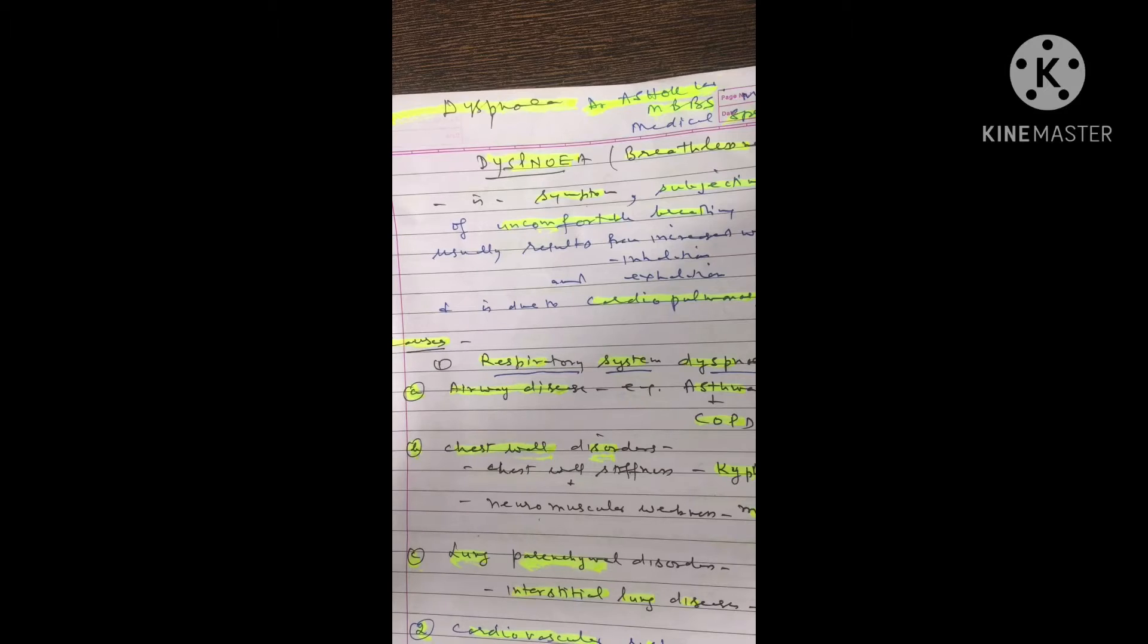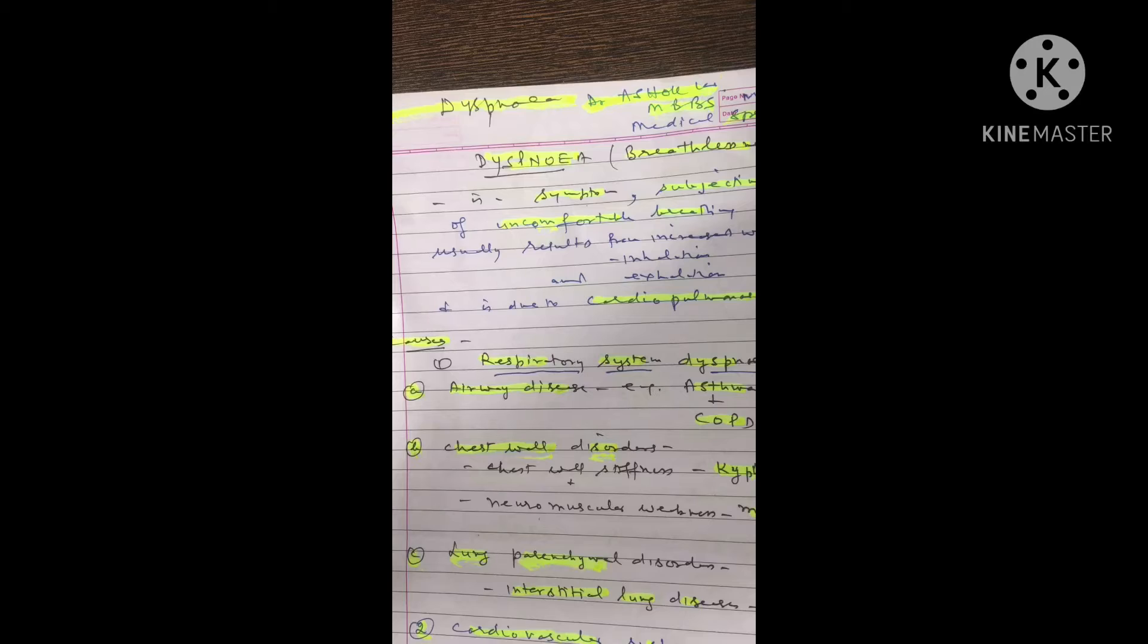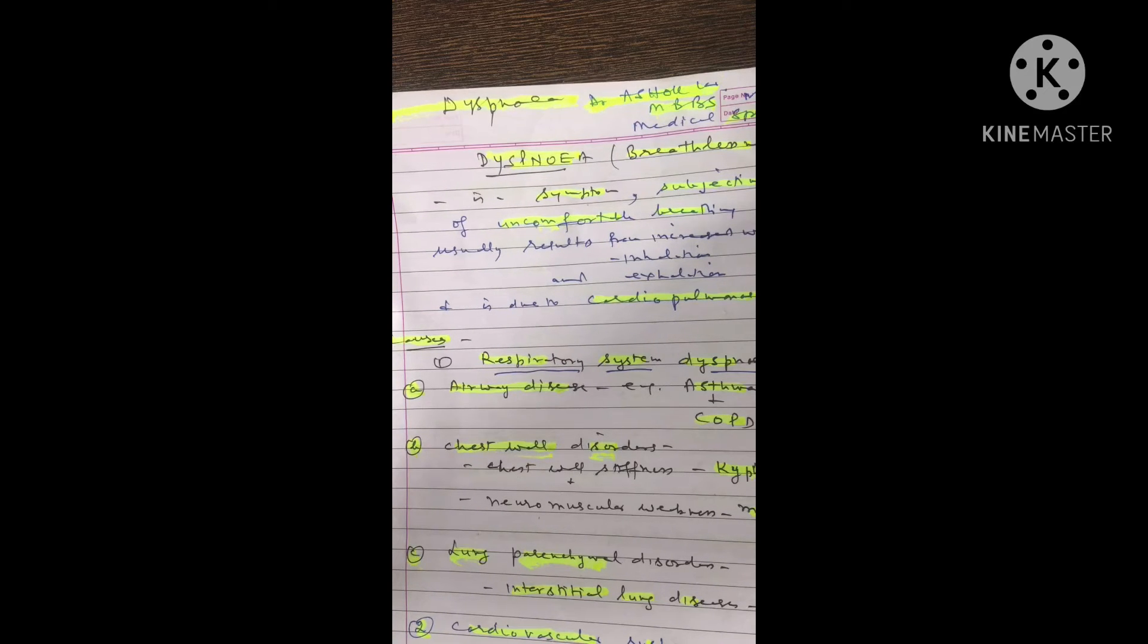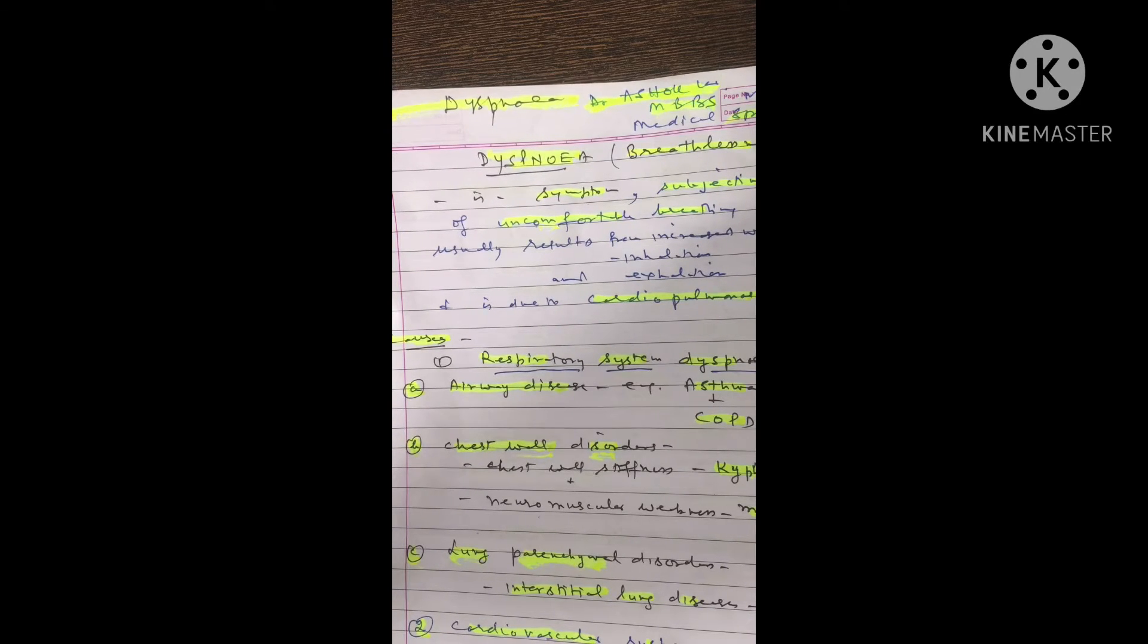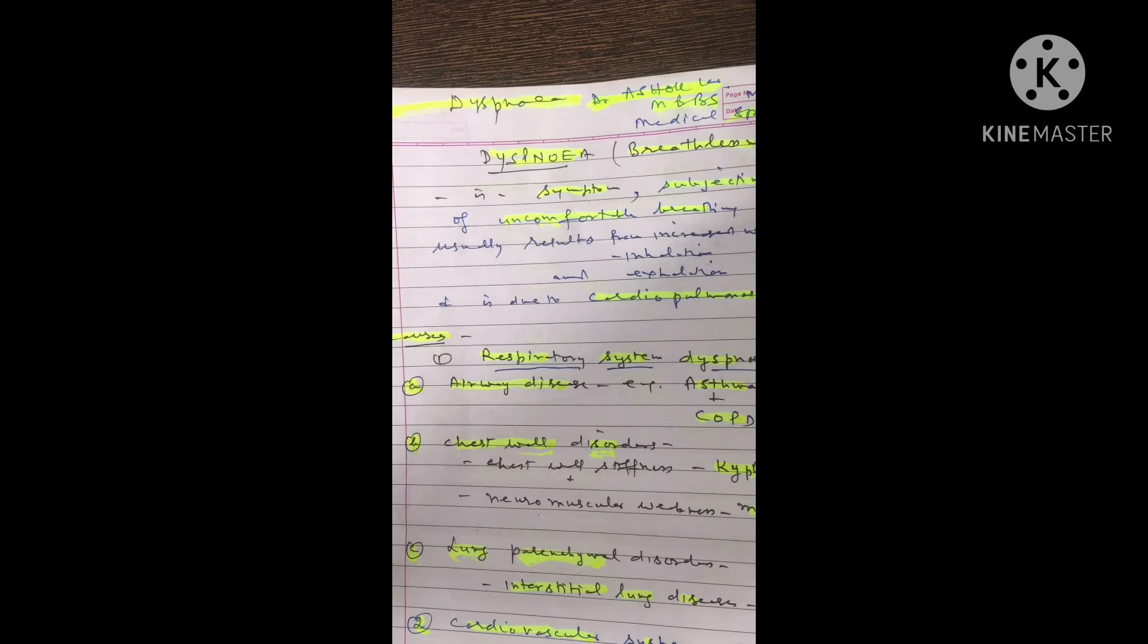The second part is cardiovascular system dyspnea, which includes left heart disorders. Here mitral valve is important. Second is pulmonary vascular disorder, including pulmonary emboli, primary pulmonary arterial hypertension, and pulmonary vasculitis.